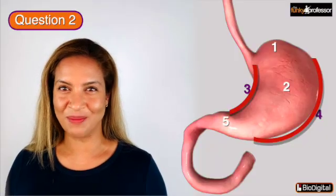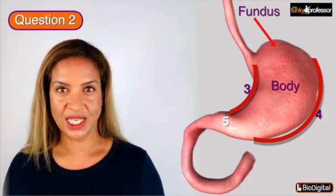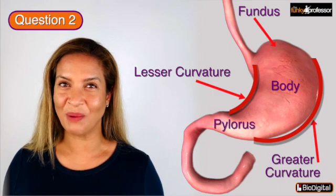The different regions labelled in this picture of the stomach are the fundus, the body, the lesser curvature, the greater curvature and the pylorus.